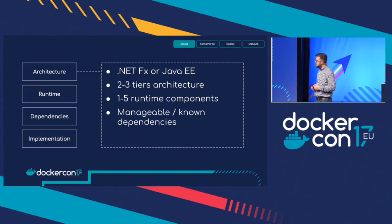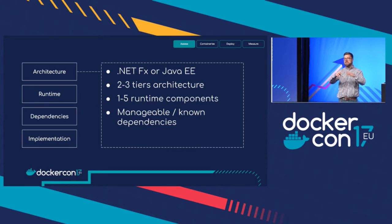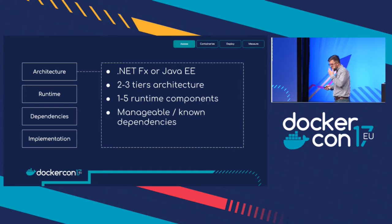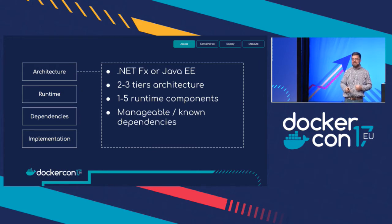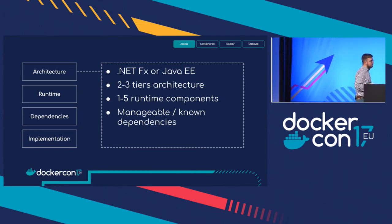Generally we look for two- to three-tier applications with between one and five runtime components. The reason we're specific on runtime components is that when I say 'application' to one person, it doesn't mean the same to another. One organization said their application was a small three-tier, three-component thing; another said their application was comprised of about 300 different services running across 4,000 different servers. So there's a lot of ambiguity. We also want manageable and known dependencies — one of the biggest challenges with modernizing any traditional application is the unknown.